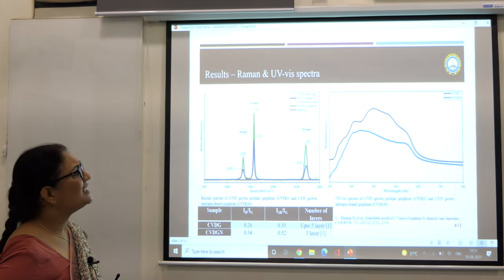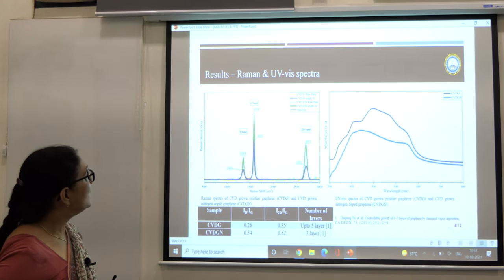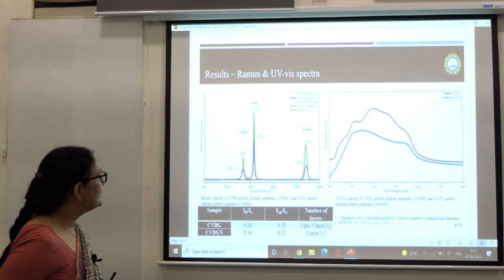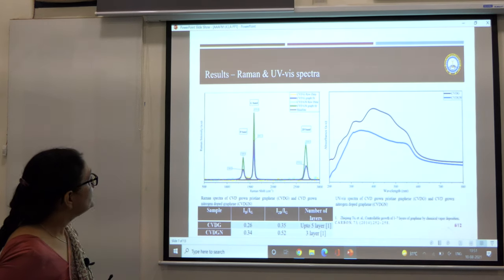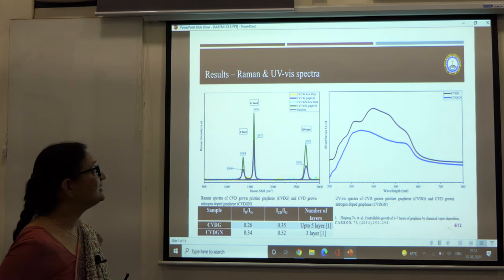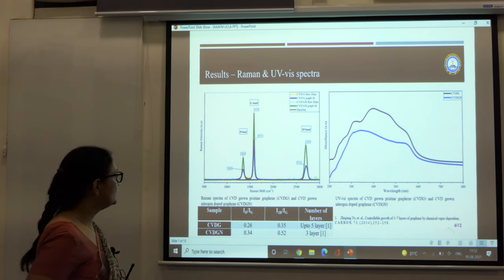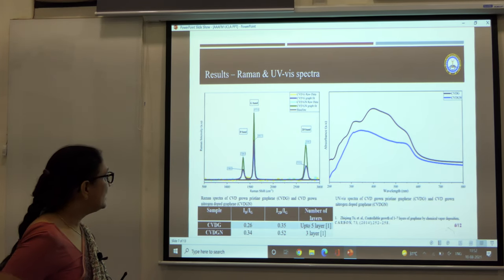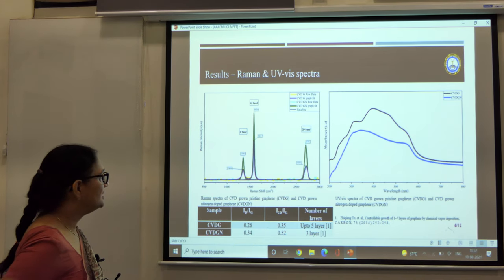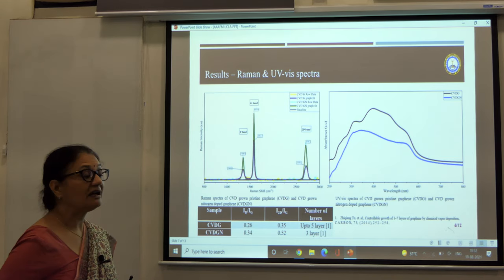Then we also checked the number of layers which we got in the sample, as we wanted only a few layers there. These are the Raman and UV visible spectra for these samples. The characteristic peaks of graphene are the D band, G band, and 2D band. When we calculated the ratio of ID and IG and the ratio of I2D and IG, we could see that the number of layers in case of pristine graphene was up to five layers.